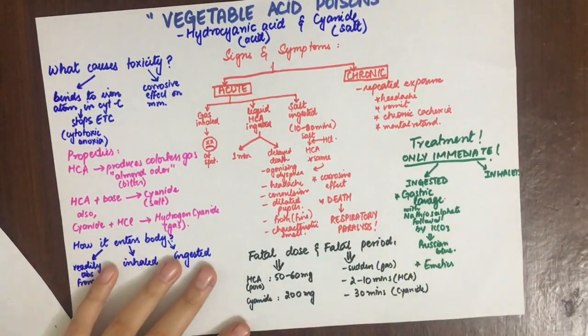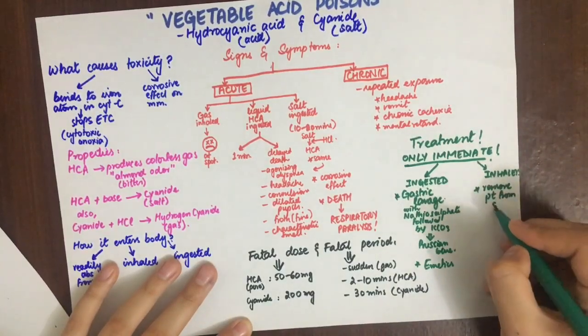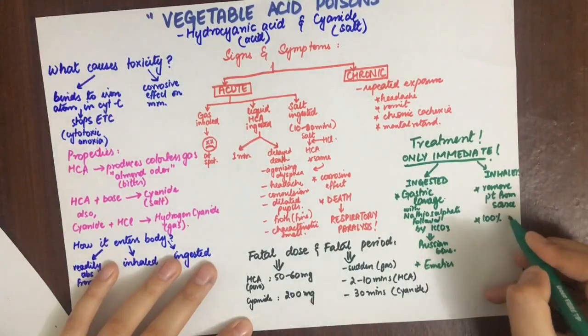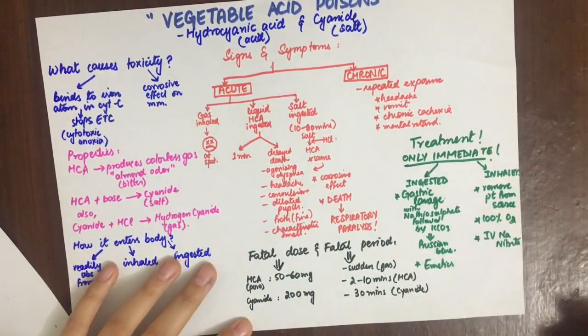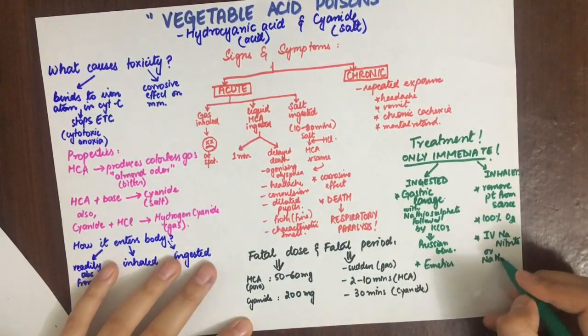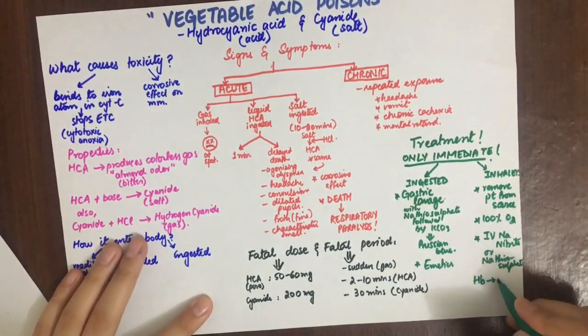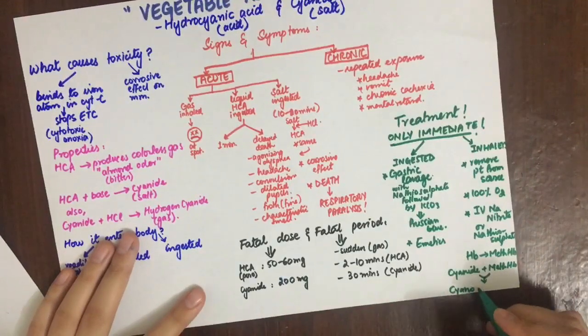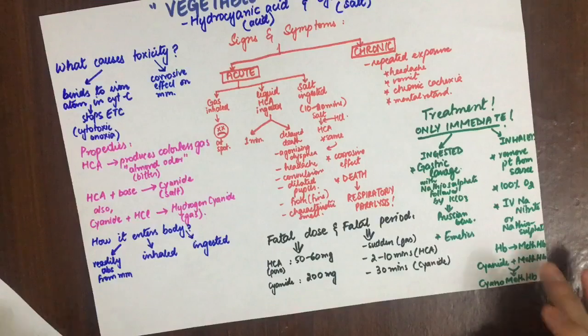If inhalation occurs, the patient should be removed immediately from the site. 100% oxygen should be given, and IV sodium nitrite and sodium thiosulfate should be given for the same reasons as previously described. It converts hemoglobin into methemoglobin, and then cyanide reacts with methemoglobin to form cyanomethemoglobin, which is non-toxic.